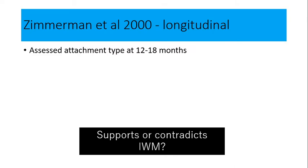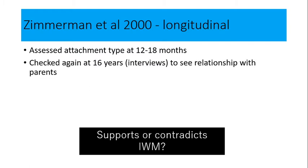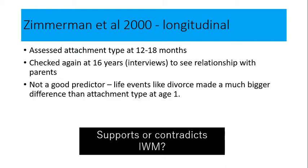Next: Zimmerman. This study looked at attachment type at 12 to 18 months and checked again at age 16, asking whether those who had a secure attachment at around one year old had a positive relationship with their parents at age 16. They found the answer was no, not necessarily — other things were making a much bigger difference than attachment type. So this one contradicts the internal working model, because other factors were found to affect relationships more than early attachment type.